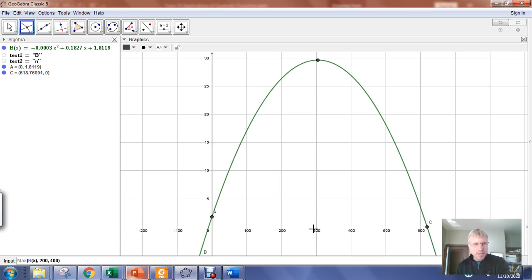And then once you do that, you just hit enter. And then bang, it puts that point on the graph and says hey, if you input 304.5, the output is going to be 29.6-ish blades of grass. So that's how you find the vertex.